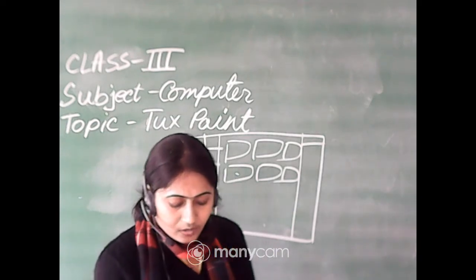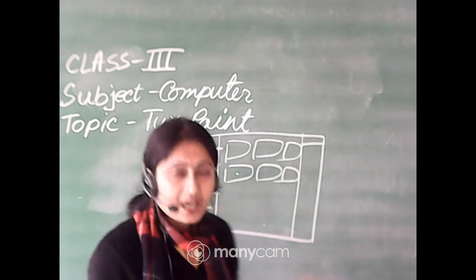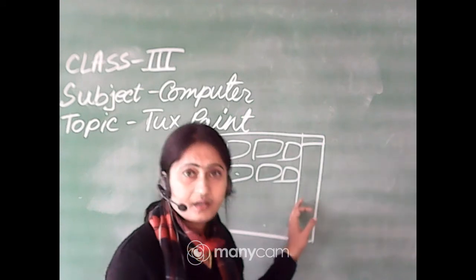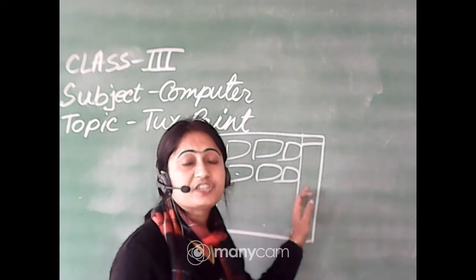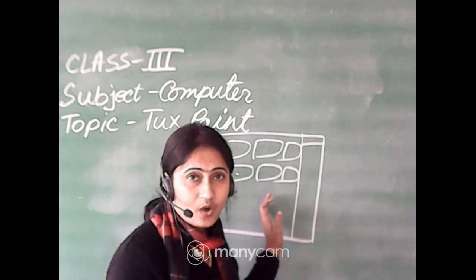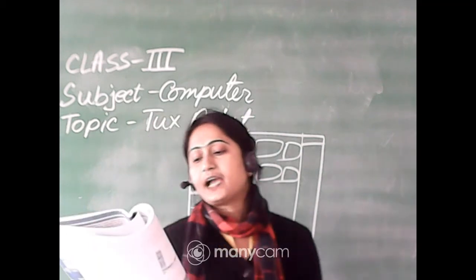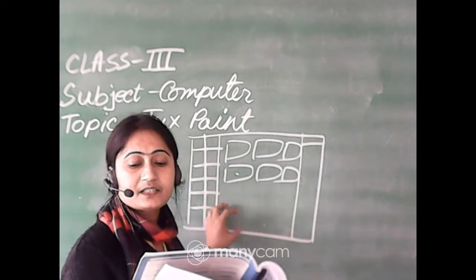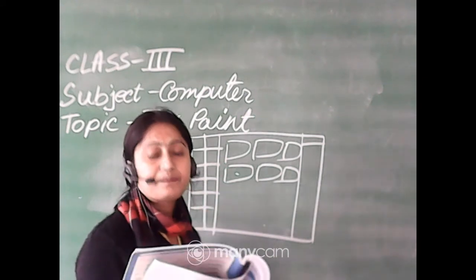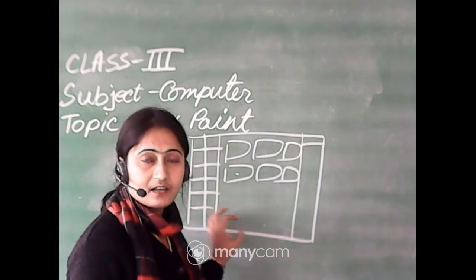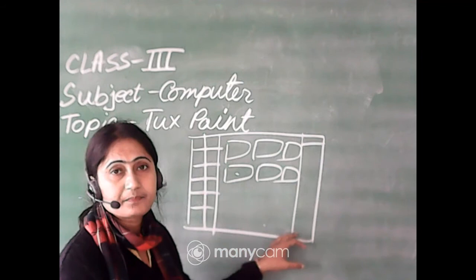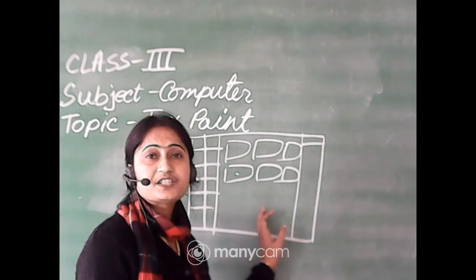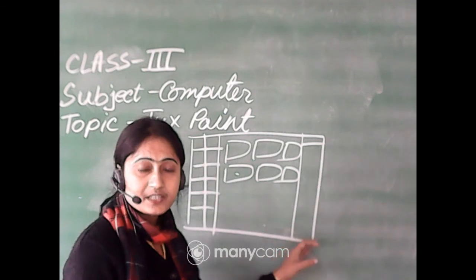You can also view all the pictures as a slideshow by clicking the slides button. All the files — whatever is already saved in your machine in Tux Paint — you can see as a slideshow. You just click on the slides button, and then click the play button. When you press play, you can see all the files one by one.